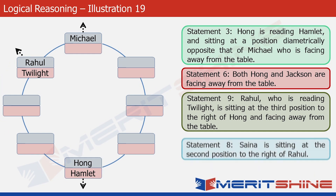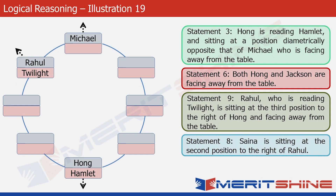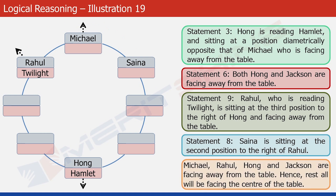Let's look at statement eight. It says Saina is sitting at the second position to the right of Rahul. Since Rahul is facing outward, the second position to his right would be this cell, so let's write Saina here. Now we know that four people are facing away from the table: Michael, Rahul, Hong, and — from statement six — Jackson. That means everybody else, including Saina, must be facing the center of the table. Let's put an inward arrow at Saina's position.